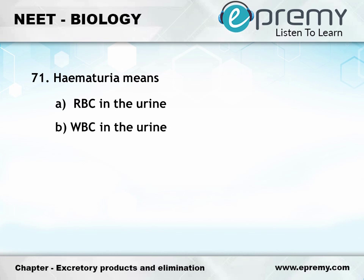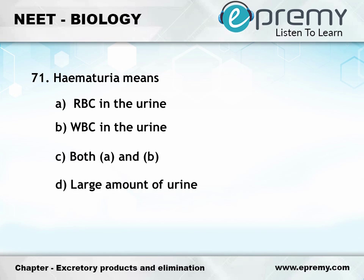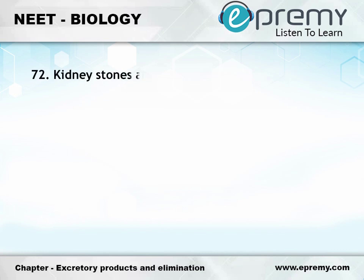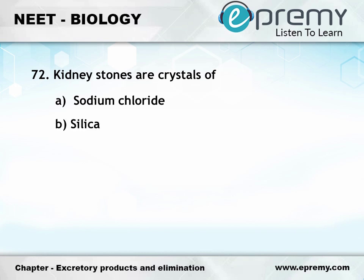Question number 71: Hematuria means — Option A: RBC in the urine, Option B: WBC in the urine, Option C: Both A and B, Option D: Large amount of urine. The answer is Option A: RBC in the urine.